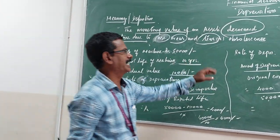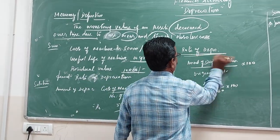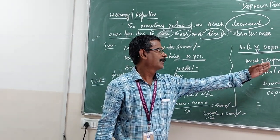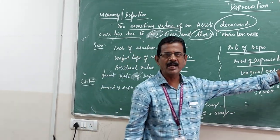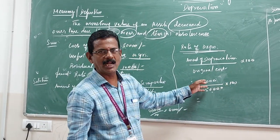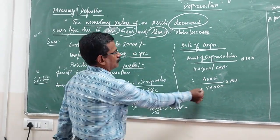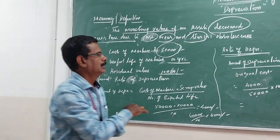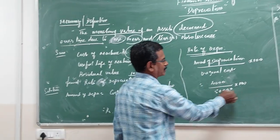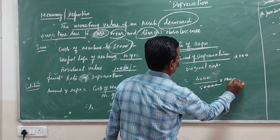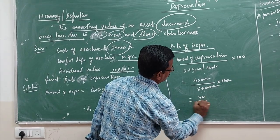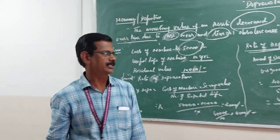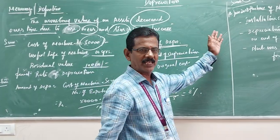With the amount of depreciation, we can now find the rate of depreciation. The formula for the rate of depreciation is: amount of depreciation divided by cost of the machine. So 4,000 divided by 50,000 equals 8%. That is the rate of depreciation.